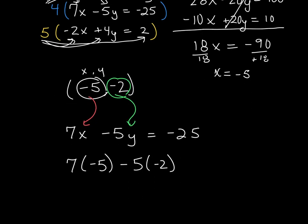I will see 7 times negative 5 minus 5 times negative 2. When I do this, negative 35 plus 10, yep, it equals negative 25. So I know I have done that equation correctly.